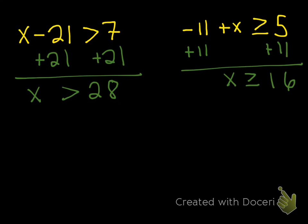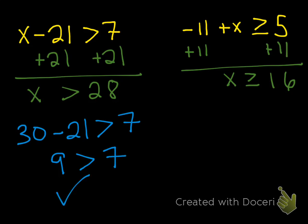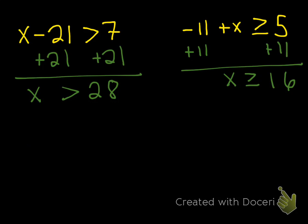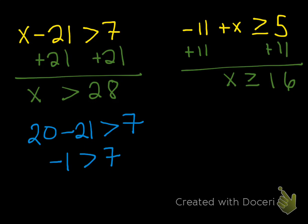Just like equations, when you're doing stuff like this you need to go back and check your answers. It's saying x has to be anything greater than 28, so pick a number greater than 28 — let's pick 30. So 30 minus 21 is greater than 7. 30 minus 21 is 9. Is 9 greater than 7? Yes, so that one works. Let's see if you pick a number less than 28 — let's do 20. 20 minus 21 is greater than 7; 20 minus 21 is negative 1. Negative 1 is not greater than 7, so that would mean you had done it wrong. It's just a way to check.